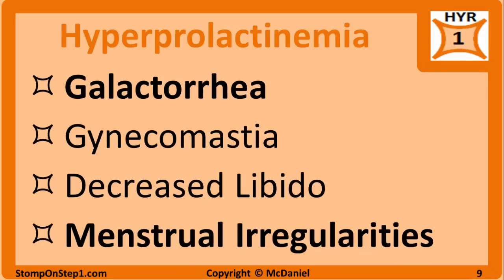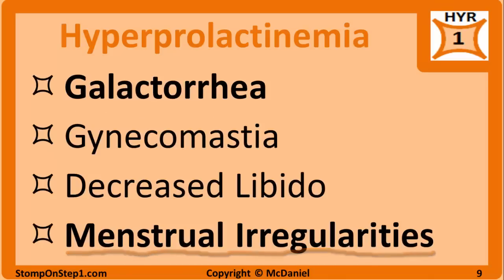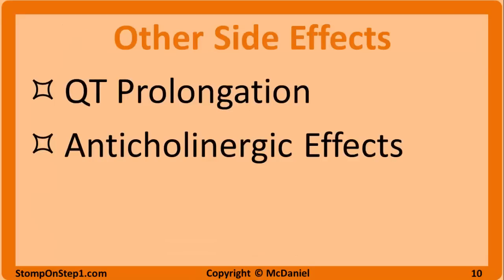Hyperprolactinemia is a side effect due to blockage of tuberoinfundibular dopamine. It presents just like any other disease that increases prolactin, so you can have galactorrhea, gynecomastia, decreased libido, and menstrual irregularities. These are not tested as often, but typical antipsychotics can also cause QT interval prolongation and anticholinergic effects such as sedation, orthostatic hypotension, dry mouth, constipation, etc.